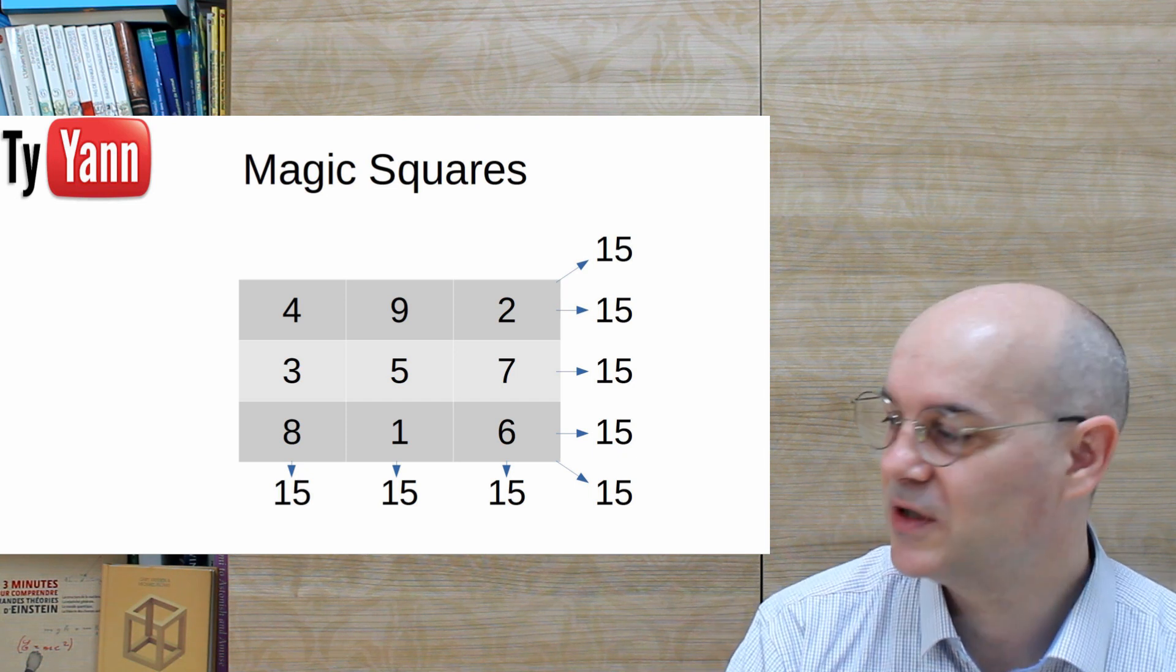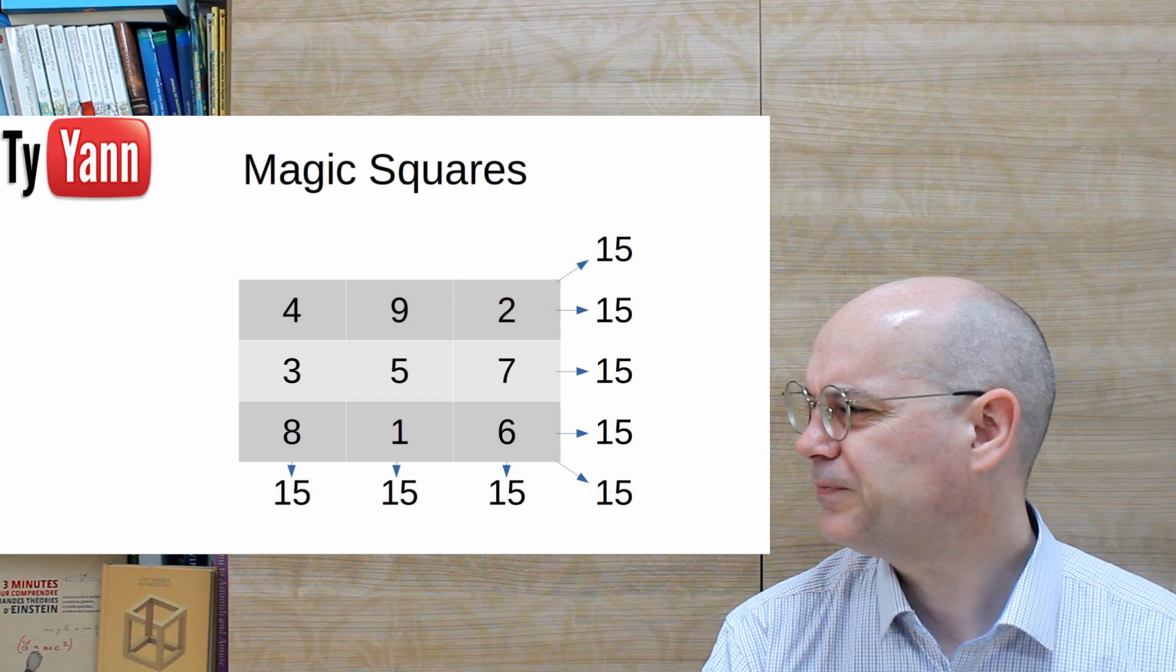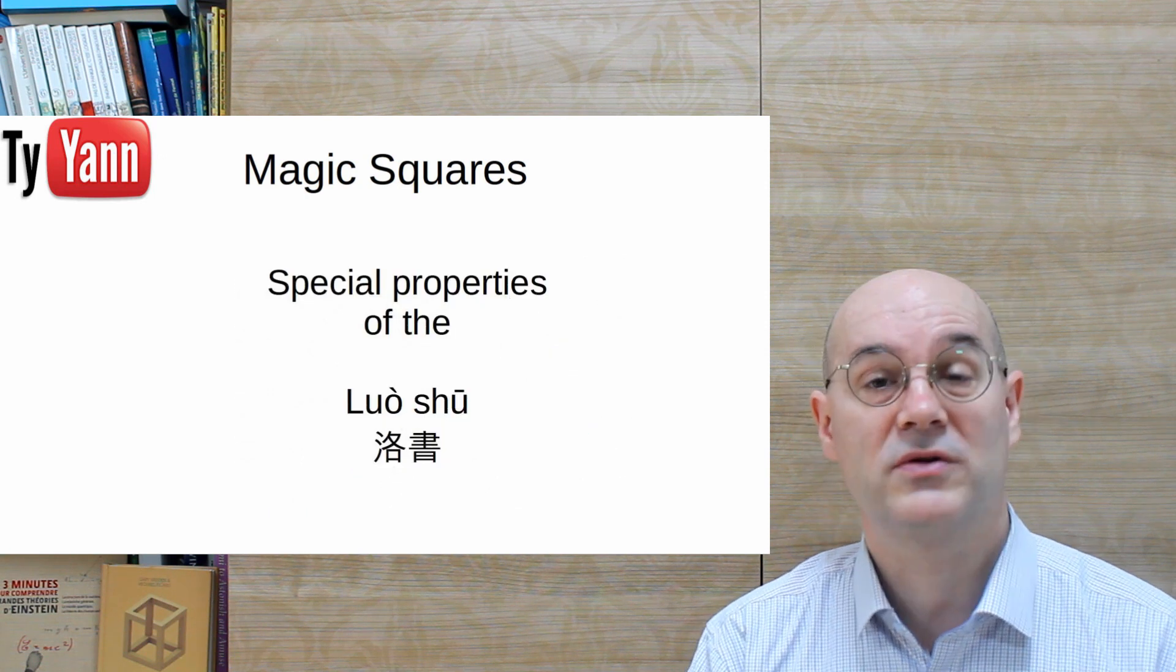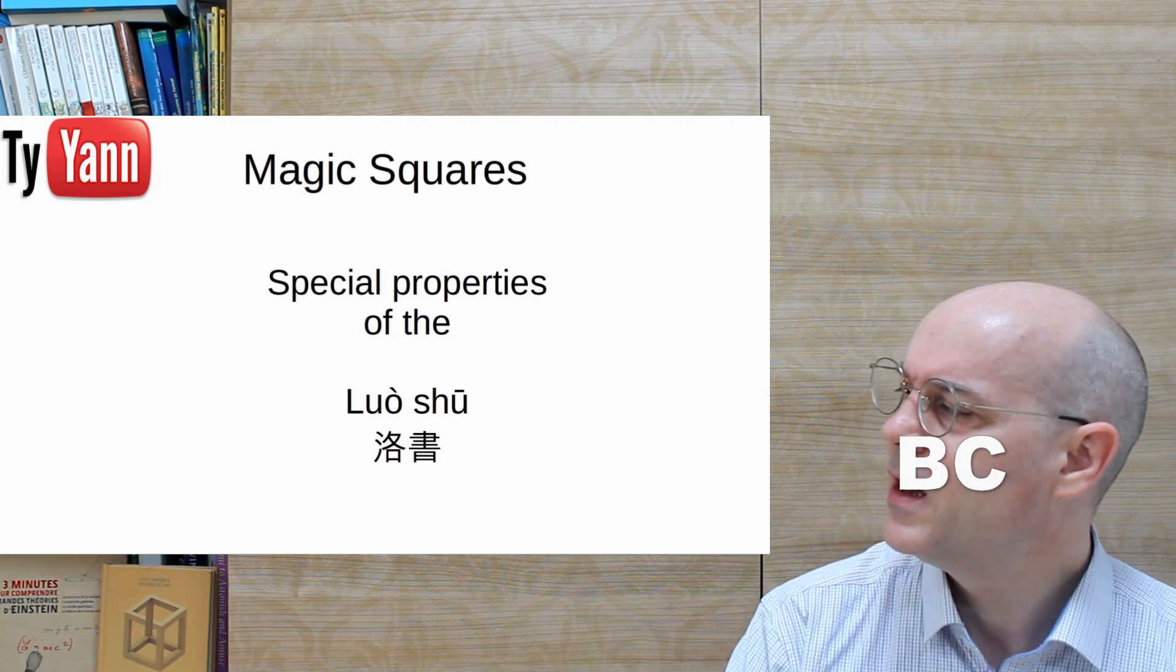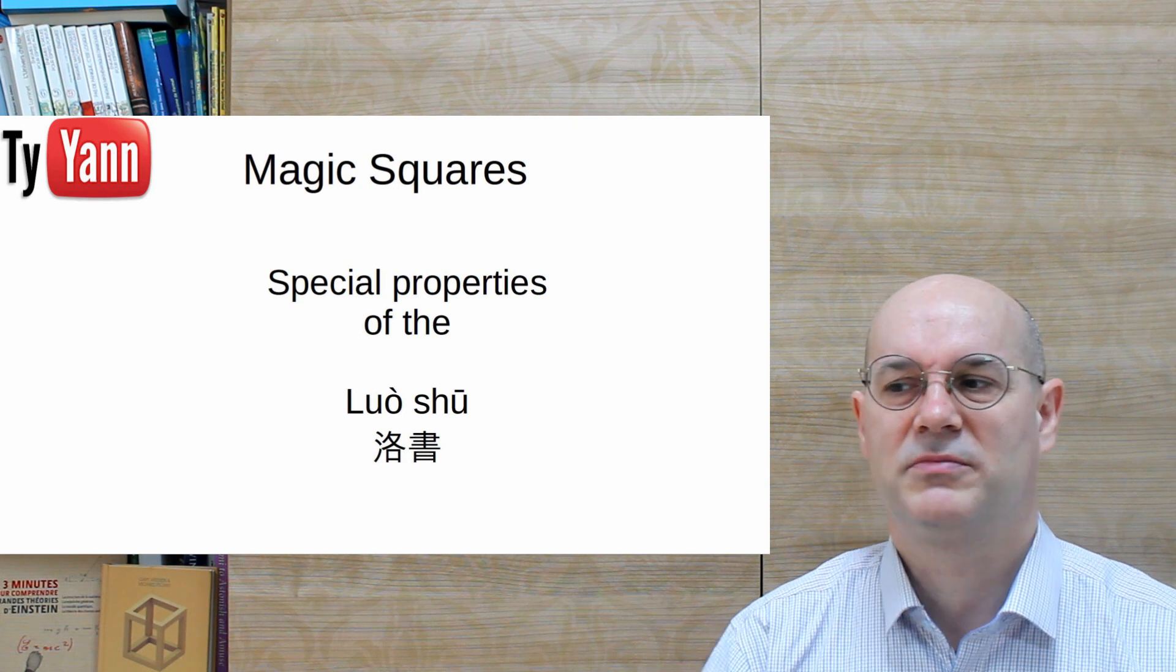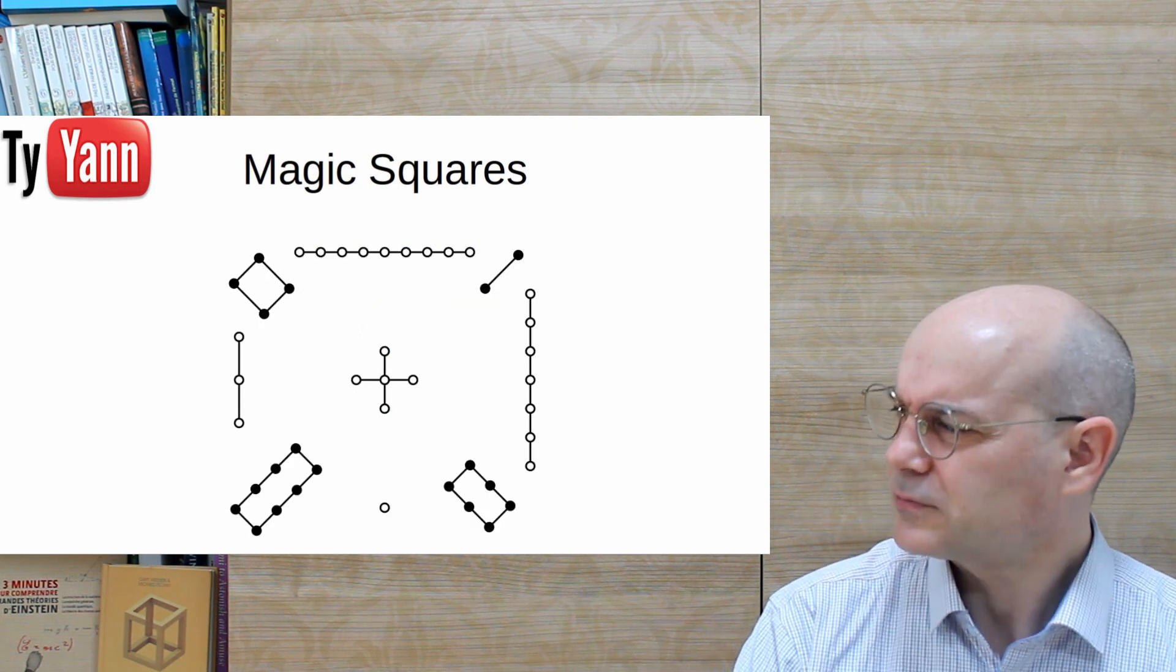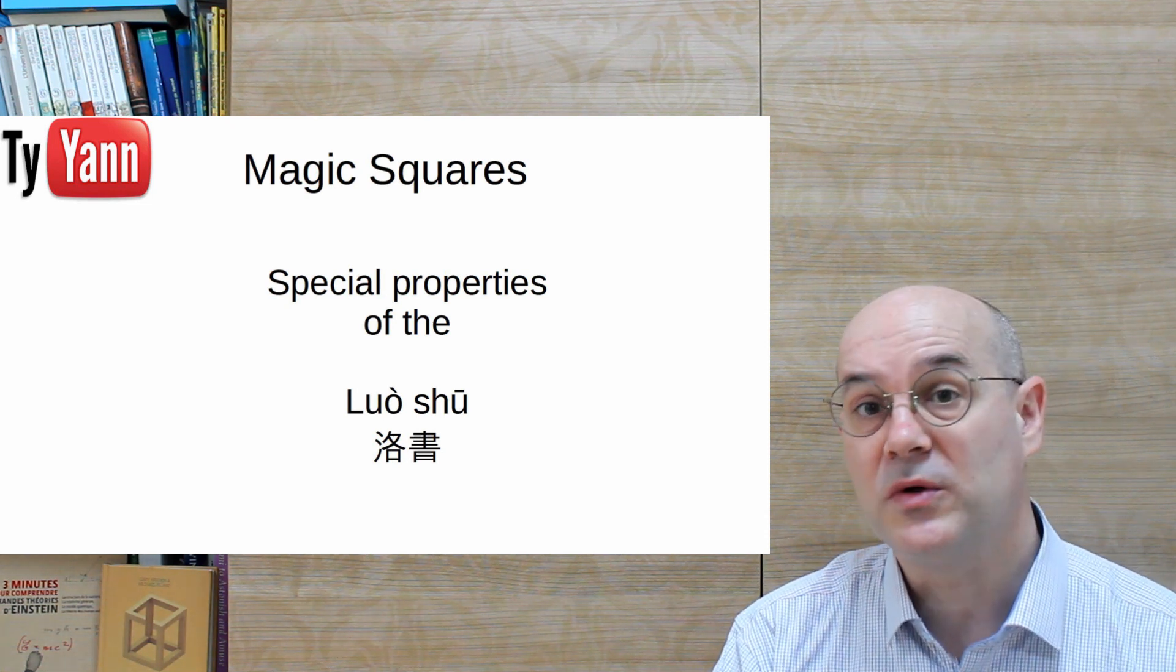And is there anything else to say about this square? Yes, a lot of things to say about this square. So first, this square has a name because it's been known at least from the 2nd century AD. It's called the Luoshu. It's been known in China. It was a little bit mystical. But it has also something special. It is unique.